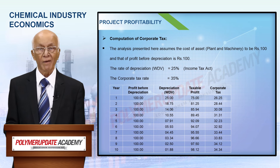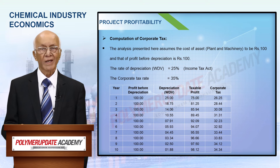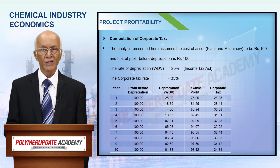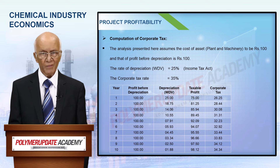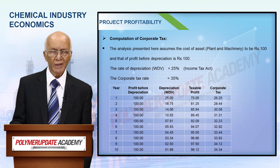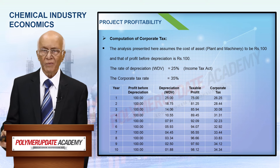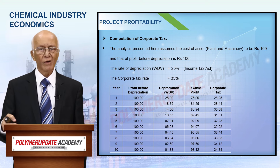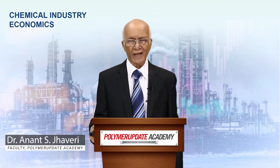Here we are presenting a table for a hypothetical example over 1 to 10 years. Suppose the profit before depreciation is 100 in the first year. Depreciation by the written down value method, as per company law for a continuous plant, is 25%. From that we calculate the taxable profit. From the taxable profit we arrive at the corporate tax, which is 35% of the taxable profit. This is computed year by year — first year, second year, third year, and so on — calculating depreciation values, taxable profit, and corporate tax accordingly.